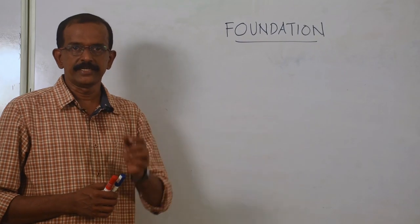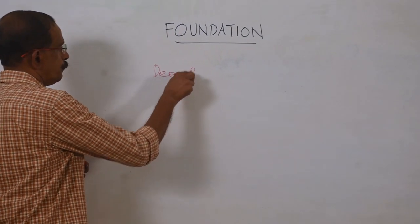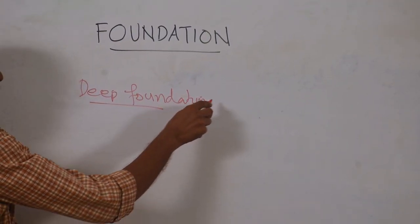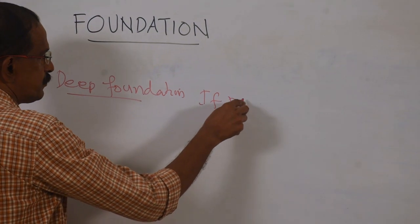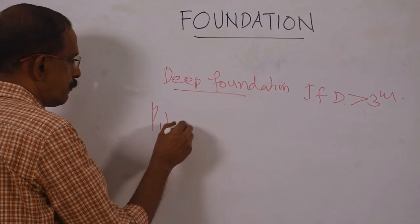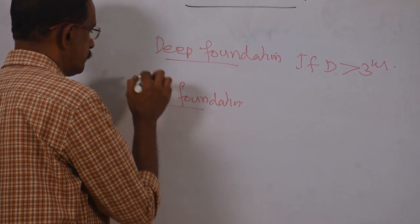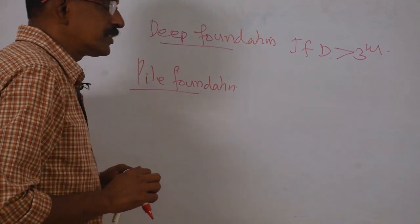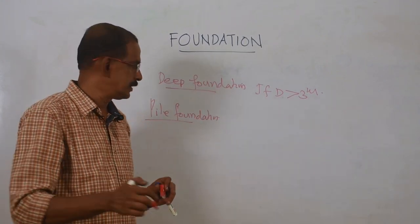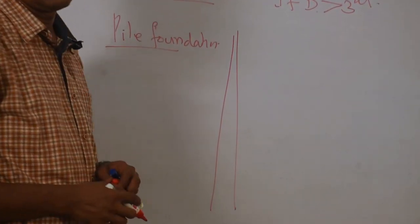Now we move to the second type, which is deep foundation. If the depth of foundation is greater than 3 meters, the first type under it is pile foundation. Pile foundation is a deep foundation constructed vertically or slightly inclined.